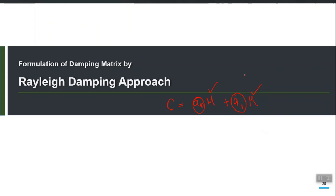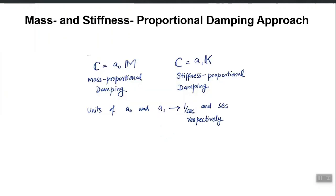If you set a₁ = 0, you are left with only mass proportional damping. If you set a₀ = 0, you have only stiffness proportional damping. When both a₀ and a₁ are non-zero, you have both mass and stiffness proportional damping. The resulting matrix from this approach will be classical damping. The basic assumption in mass proportional damping is that damping is distributed like mass; in stiffness proportional damping it is distributed like stiffness.